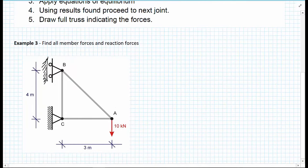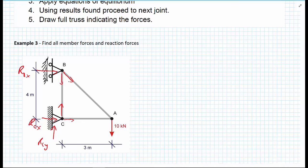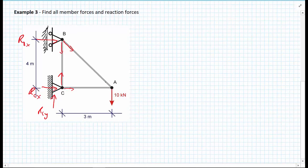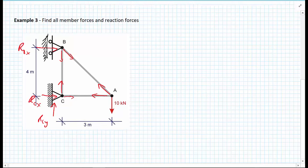Looking at joint C, we have unknown forces FBC and FAC. We also don't know the reaction force RCX in the X direction, or RCY in the Y direction. At joint B, we don't know RBX, FBC, or FAB. At joint A, we don't know FAB or FAC, but we do know the external force applied there.